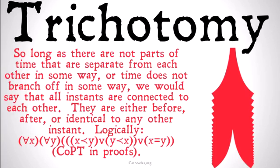This trichotomy principle seems to make sense: any instant is either before, after, or identical to any other instant. For example, taking the instant of exactly 10:55 p.m. on November 23, 2014 — that exact instant is before, after, or identical to any other instant in time. Stated logically: for all instants x and all instants y, x precedes y, or y precedes x, or x is identical to y. Remembering that if two instants are at the same time, those instants are in fact identical.